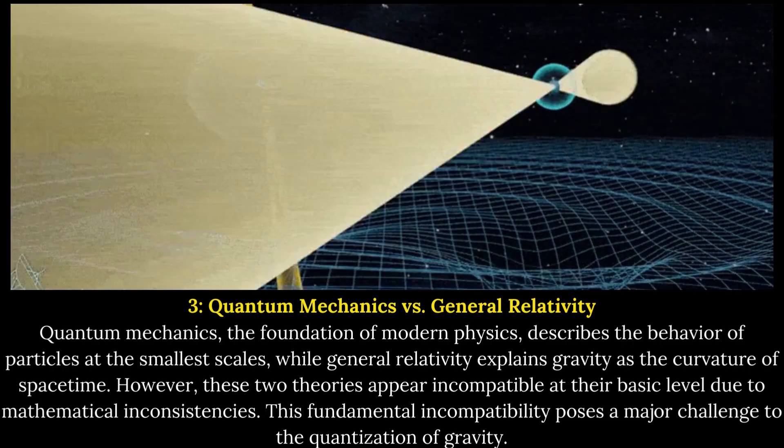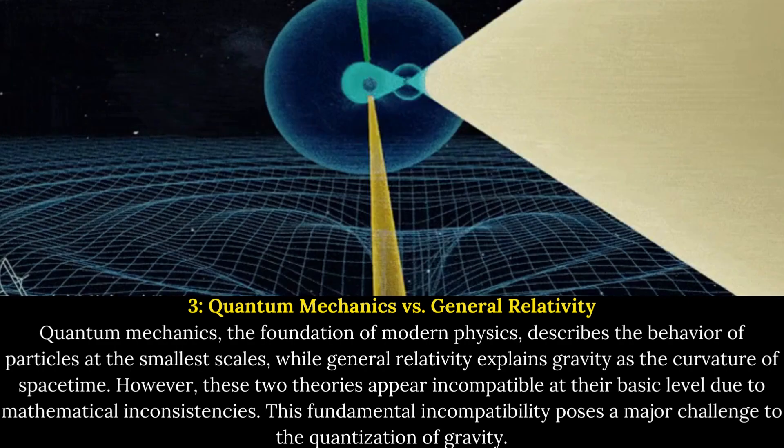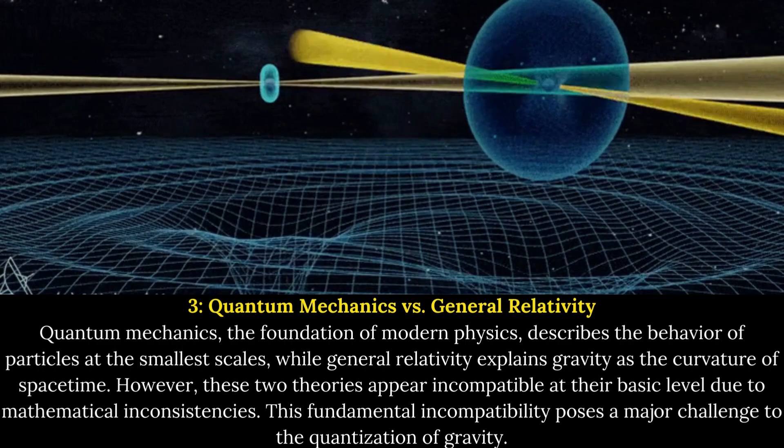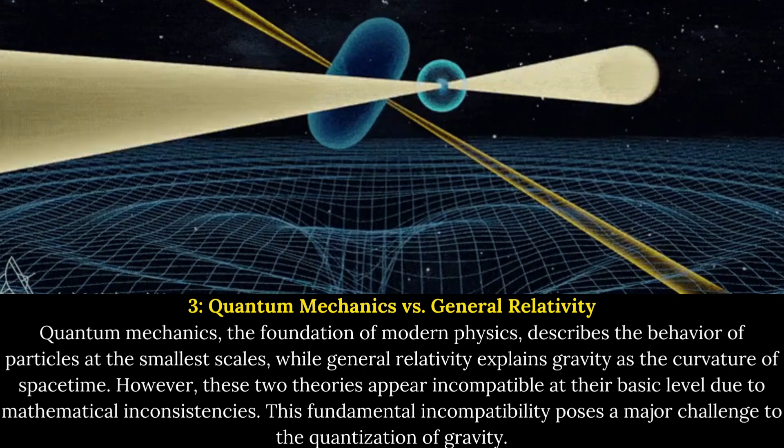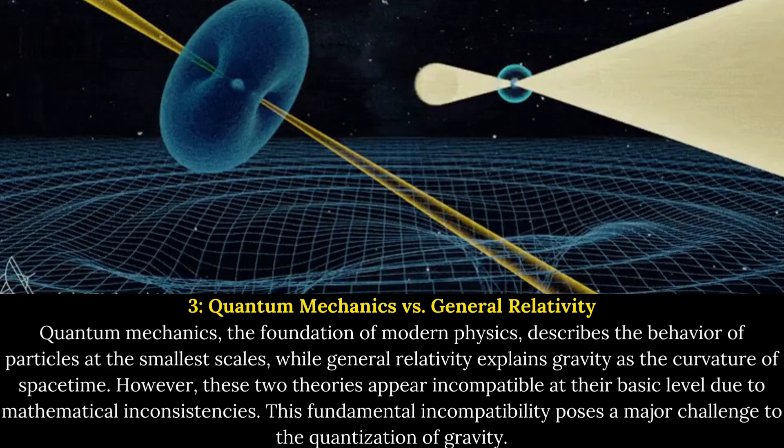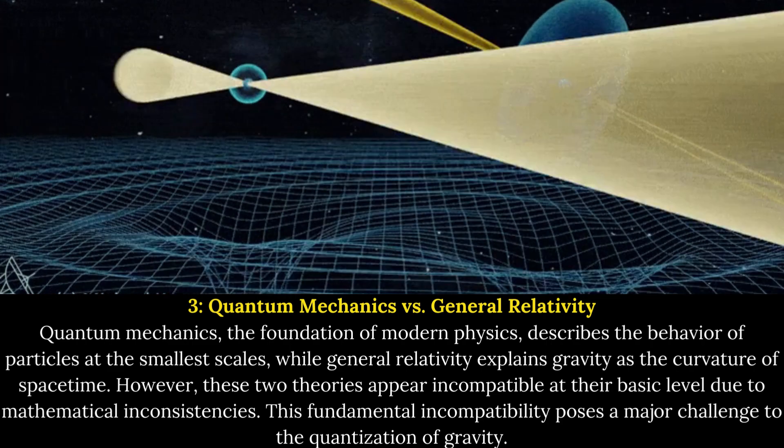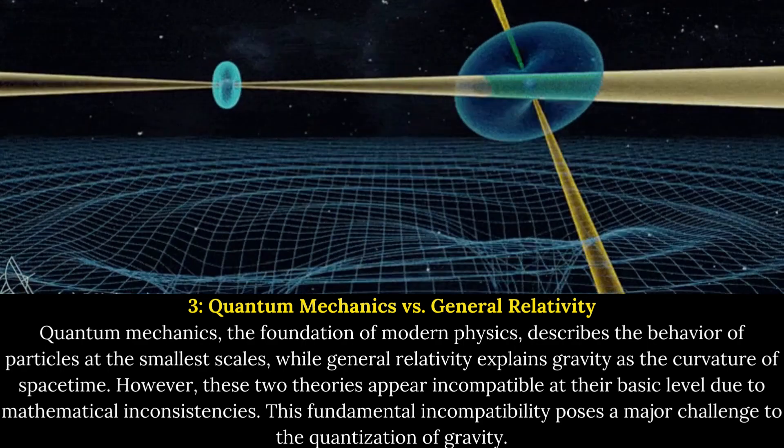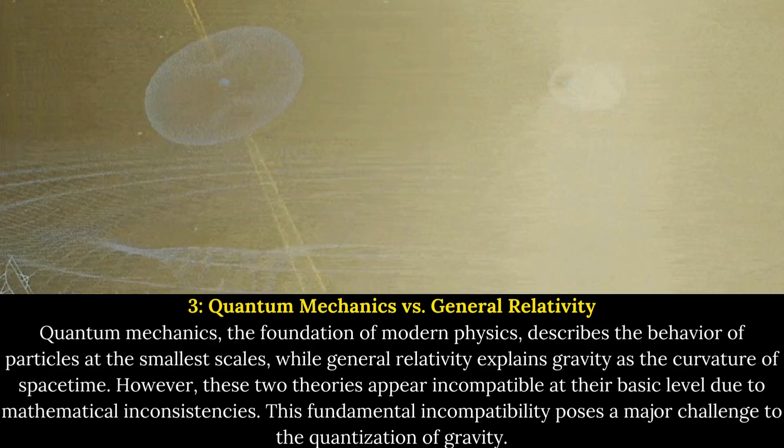Quantum mechanics versus general relativity. Quantum mechanics, the foundation of modern physics, describes the behavior of particles at the smallest scales, while general relativity explains gravity as the curvature of spacetime. However, these two theories appear incompatible at their basic level due to mathematical inconsistencies. This fundamental incompatibility poses a major challenge to the quantization of gravity.